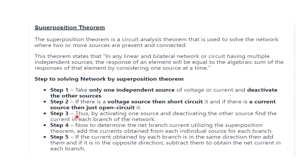Step 3: by activating one source and deactivating the other source, find the current in each branch of the network. Step 4: to determine the net branch current utilizing the superposition theorem, sum the currents obtained from each individual source for each branch. Step 5: if the current obtained in each branch is in the same direction, then add them; and if it is in the opposite direction, then subtract them to obtain the net current in each branch.